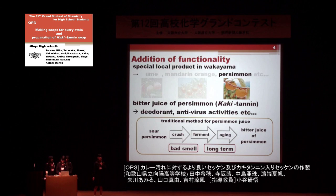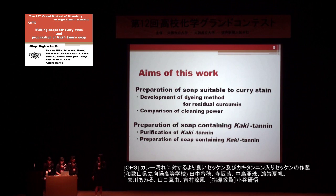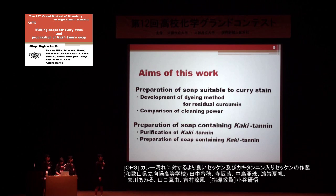In this study, we made seven kinds of soap from seven kinds of natural oil to make more suitable soap for curry stain. To evaluate the cleaning power of soap by visual observation, we developed a dyeing method for residual turmeric. In addition, we designed a purification method of kakitanin from persimmon to make soap containing kakitanin.